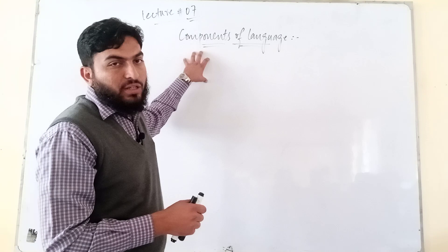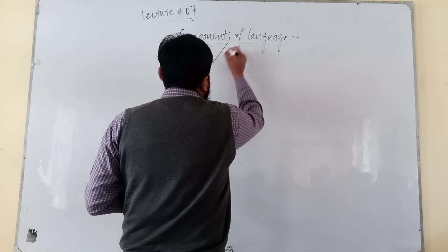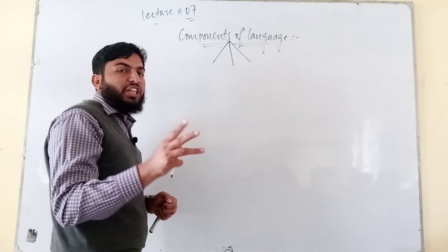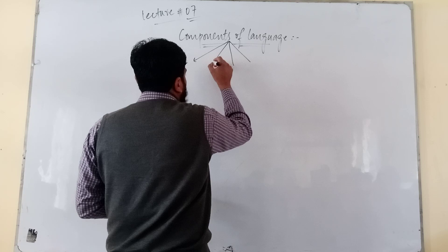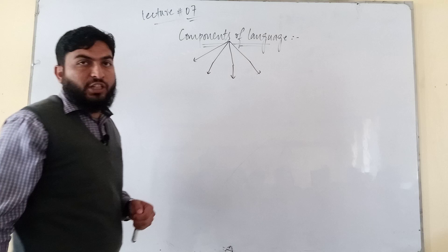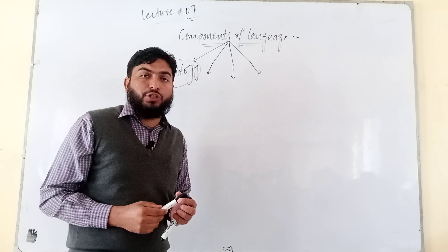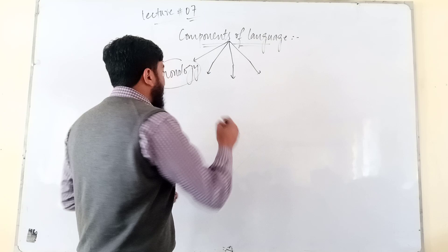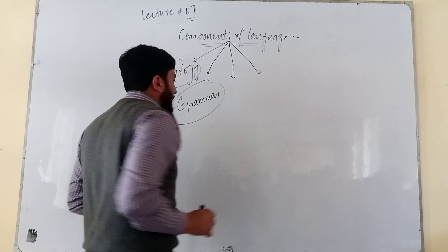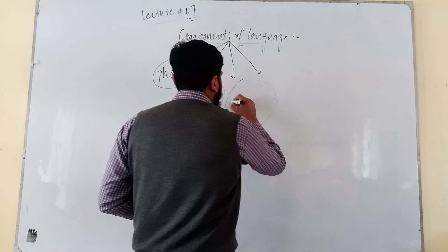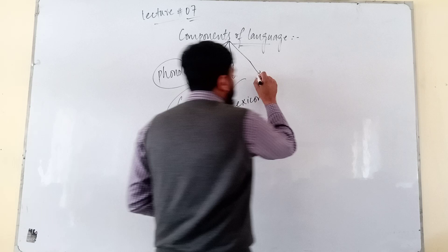So, how many components are there? Actually, there are four components. The very first component is called phonology — P-H-O-N-O-L-O-G-Y. The second component is called grammar. The third component is called lexicon. And the fourth component is called semantics.